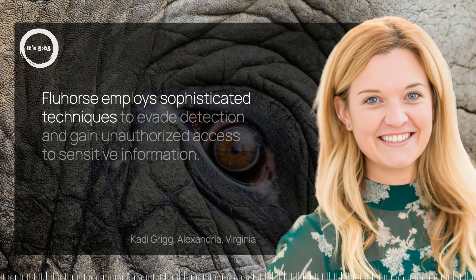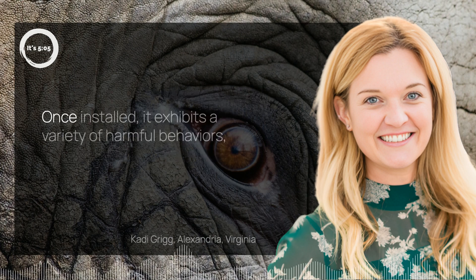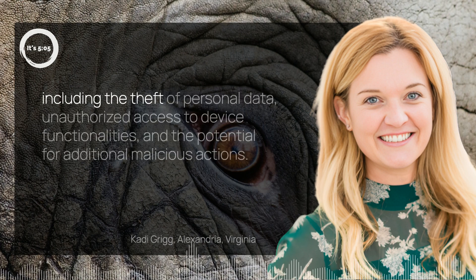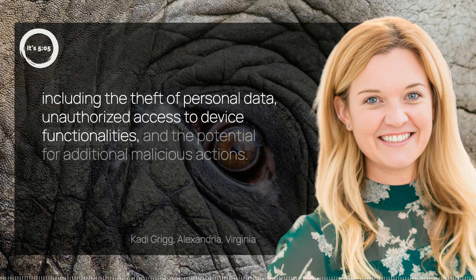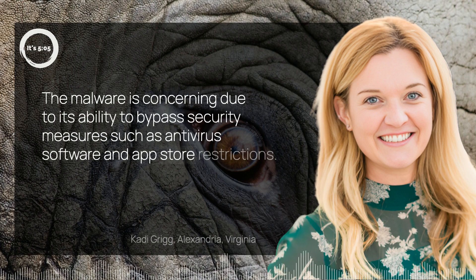Fluhorse employs sophisticated techniques to evade detection and gain unauthorized access to sensitive information. It primarily spreads through malicious apps disguised as legitimate applications, making it difficult for users to identify and avoid. Once installed, it exhibits a variety of harmful behaviors, including the theft of personal data, unauthorized access to device functionalities, and the potential for additional malicious actions. The malware is concerning due to its ability to bypass security measures such as antivirus software and app store restrictions.